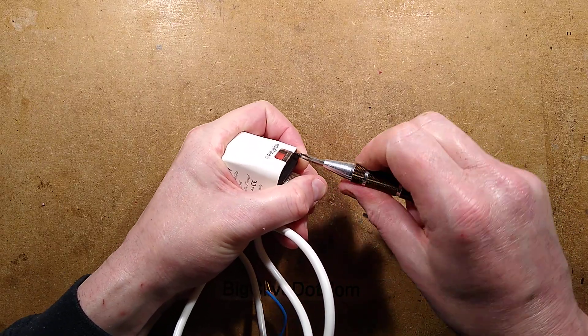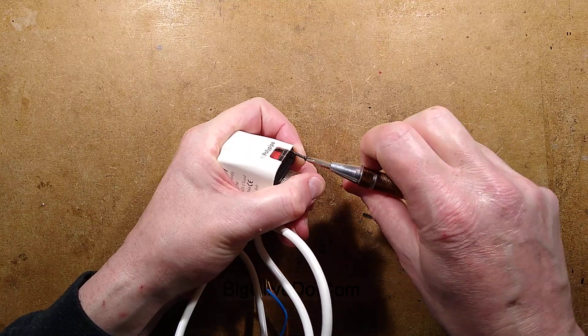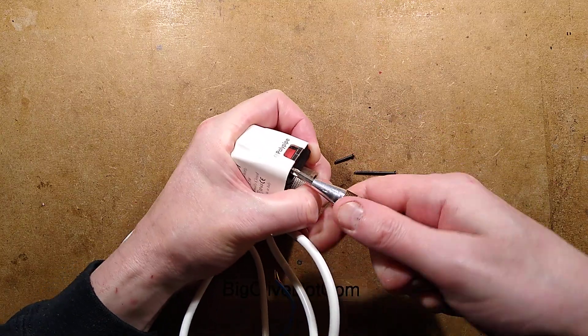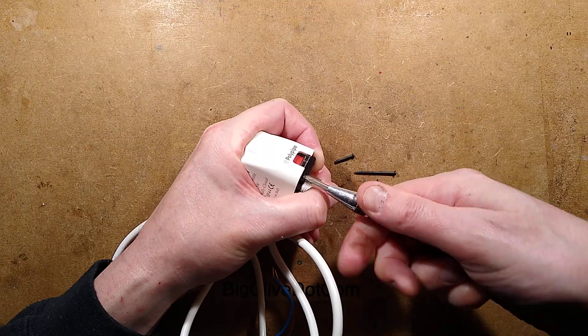So I'm going to take the screws that hold this case together, I'm going to take them out, take the case apart, remove the wax motor and then we can cut it in half with the Dremel and see what's inside.